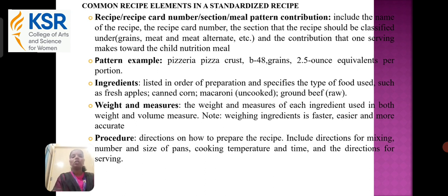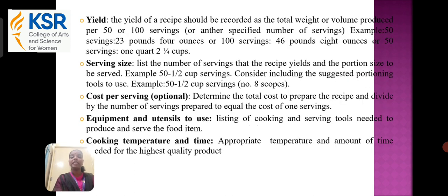Procedure covers directions on how to prepare the recipe. It includes directions for mixing, the number and size of pans, cooking temperature and time, and directions for serving. Yield: the yield of a recipe should be recorded as the total weight or volume produced per 50 or 100 servings — for example, 50 servings: 23 pounds 4 ounces, or 100 servings. Serving size lists the number of servings that a recipe yields and the portion size to be served.